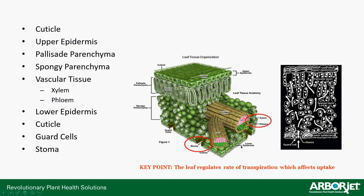The lower epidermis, typically lighter green, is where stomata are located with their guard cells. Guard cells close when they become dehydrated and open when saturated — you want them open because that allows gas exchange: carbon dioxide in, oxygen out, and excess water vapor out. This release of water vapor makes room for the tree to pull more water in, drawing water, nutrients, and injected product up through the xylem tissue.